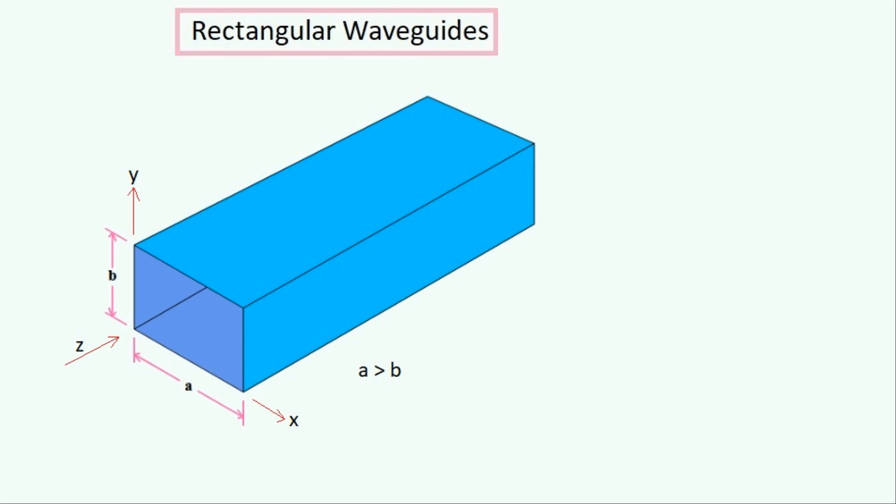The waveguide will be made of a good conductor, usually a metal. The rectangular waveguide is the easiest of the waveguides to solve using theory.